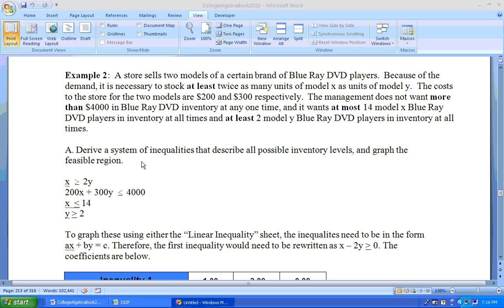So we need a system of inequalities here. Now the first bit here says that it is necessary to stock at least twice as many units of X as units of Model Y. So X needs to be greater than or equal to twice that of Y. So that would be the first inequality right there.